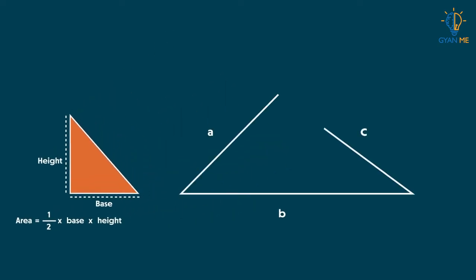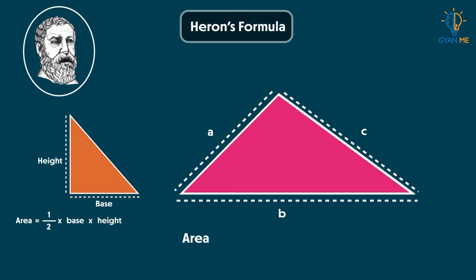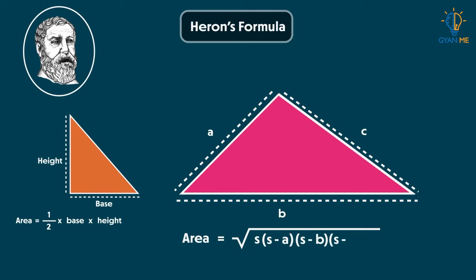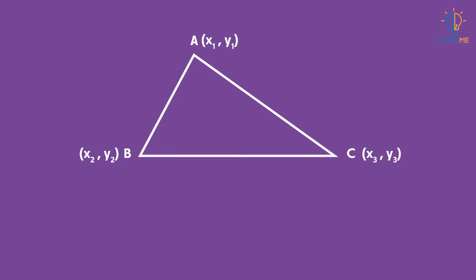And if we are given the measurements of the sides of a triangle, you can compute the area of the triangle by using Heron's formula, which is the square root of s(s−a)(s−b)(s−c), where s is the semi-perimeter and a, b, and c are the sides of the triangle.